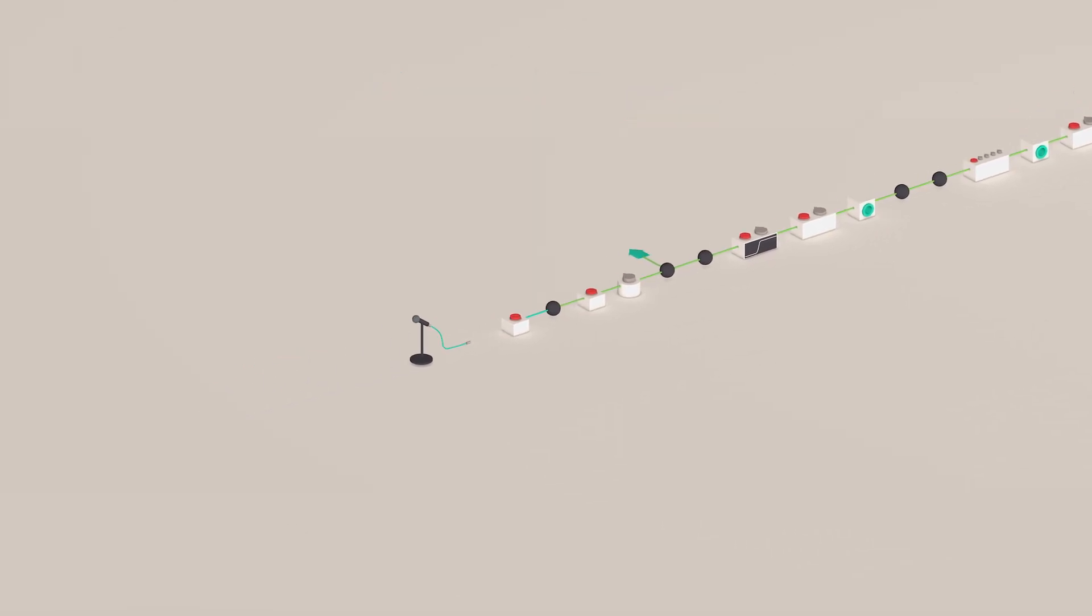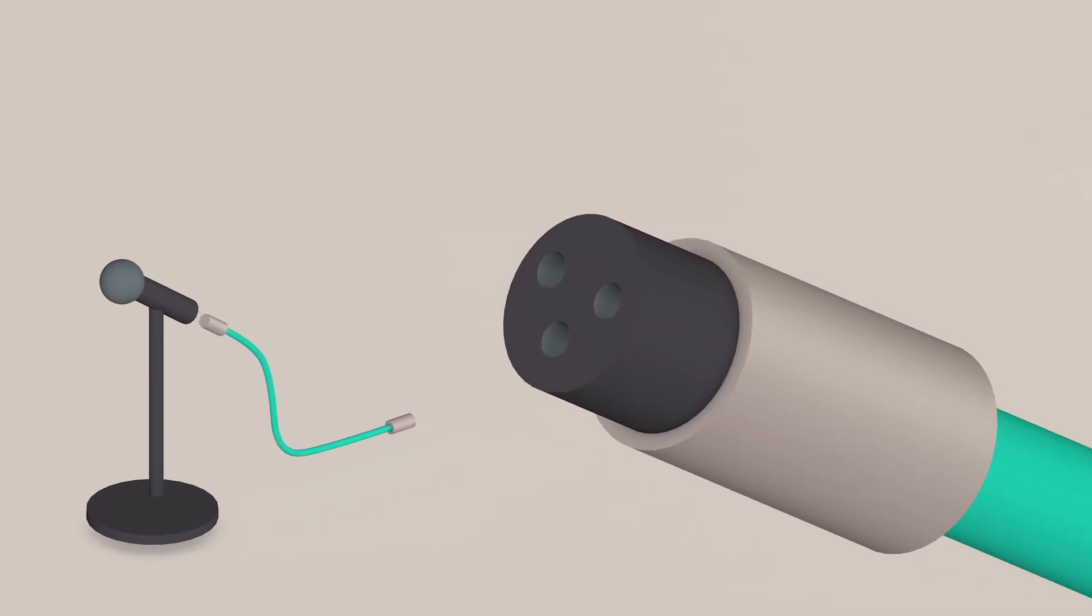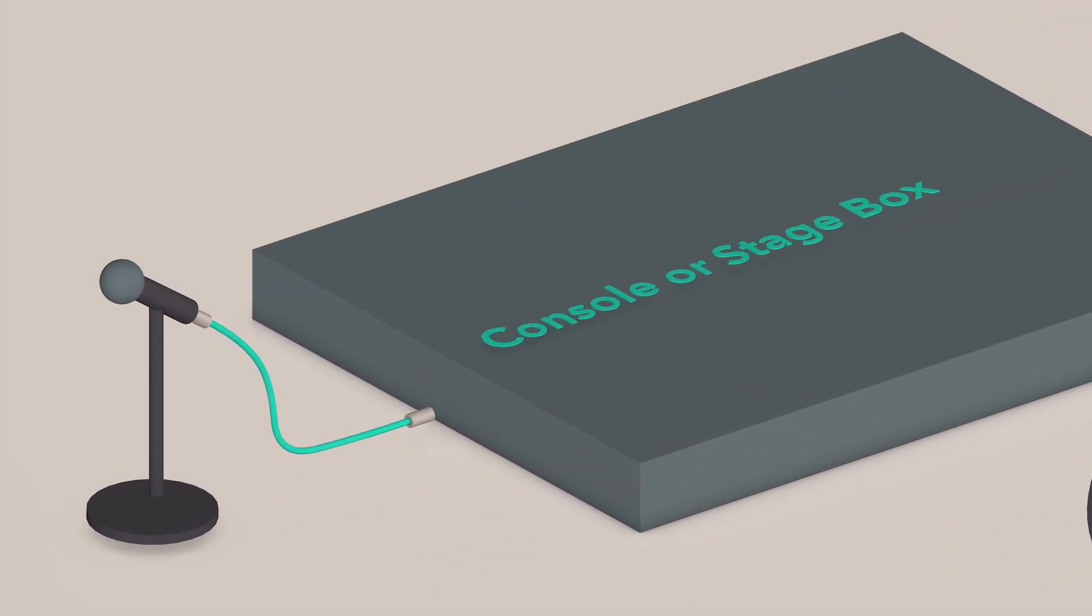We begin with the microphone and an XLR cable. The socket end of the XLR cable is input into the microphone. The XLR cable is connected to the input on our console or stage box.